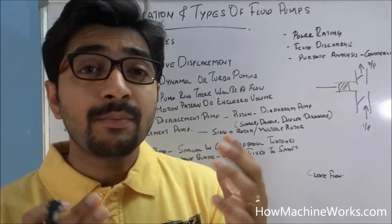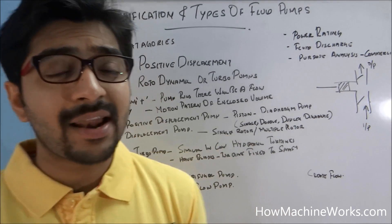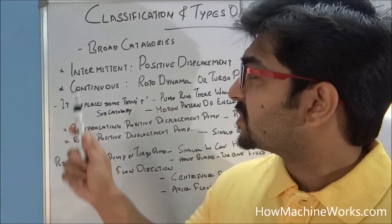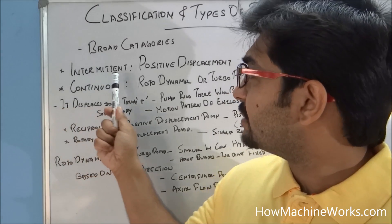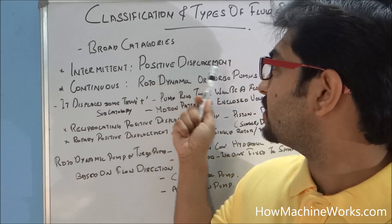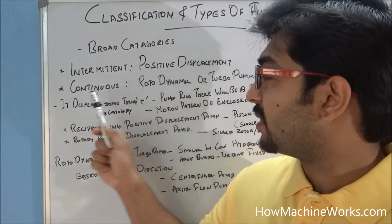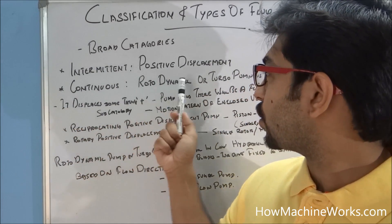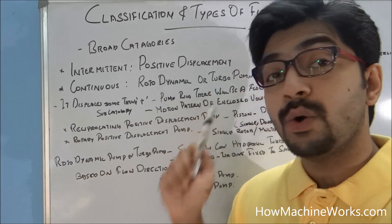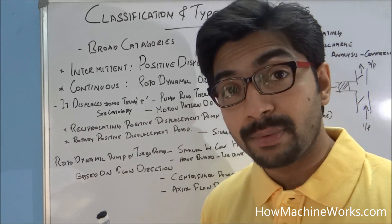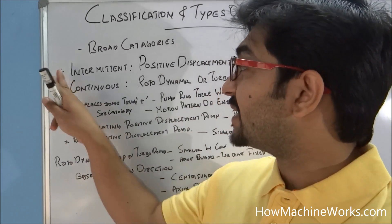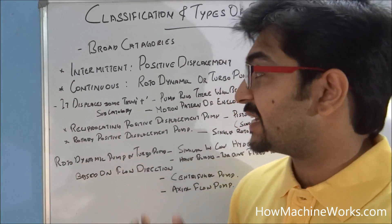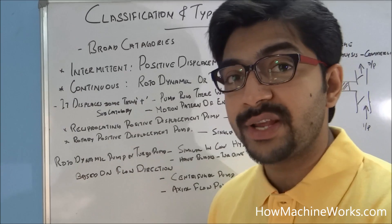Broadly, hydraulic pumps are classified into two criteria: the first is the intermittent positive displacement pump, and the second is the continuous rotor dynamic or turbo pump. Let's see these broad classifications and their subcategories.